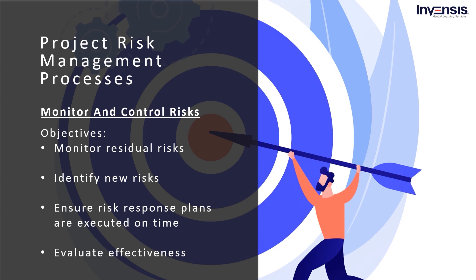Let us talk about the primary objectives of risk monitoring and controlling. Firstly, it is important to track pre-evaluated risks, monitor residual risks, and identify new risks. Also, you must ensure that risk response plans are executed at the relevant time and evaluate their effectiveness throughout the project life cycle. In addition to tracking and managing the risk response actions, the effectiveness of all project risk management processes should be reviewed to improve the management of the current project and future ones.